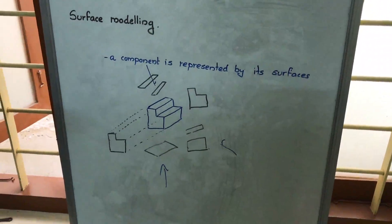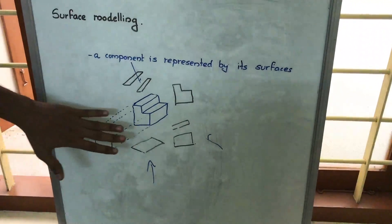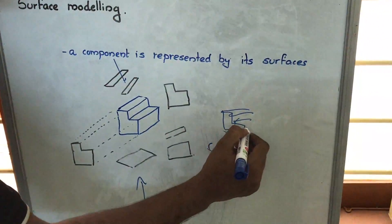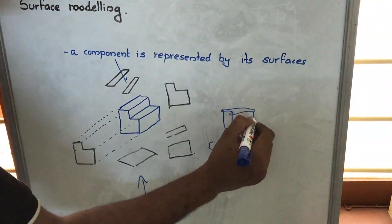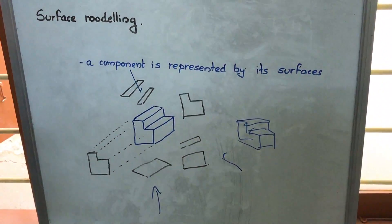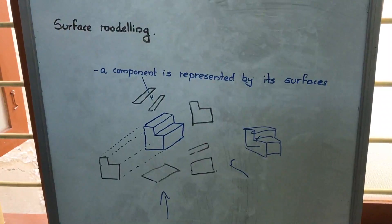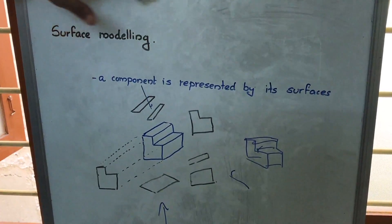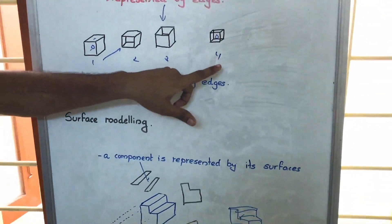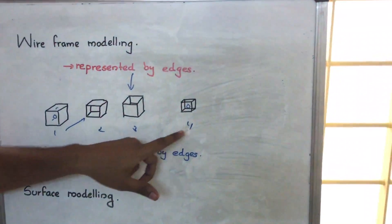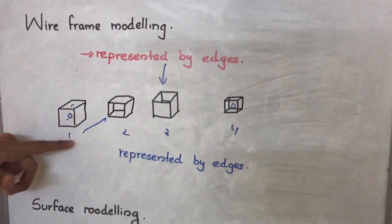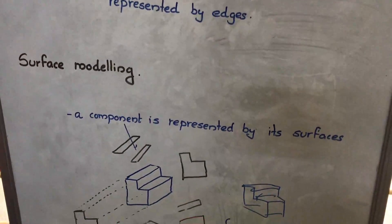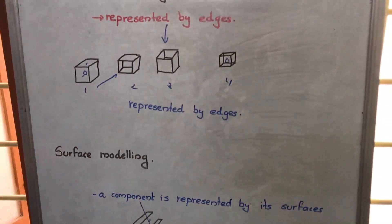In wireframe modeling, we get a combination of all the edges, but we are not able to fully understand the model or its complexities. By looking at the wireframe alone, we are unable to identify whether it represents figure one, figure two, or figure three — three different figures can share a common wireframe. In surface modeling, the model is developed as a combination of surfaces, which resolves this ambiguity.